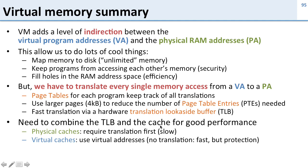We saw two basic cache combinations. First, there's a physical cache, which uses a physical address to index into the cache. This means we have to do the TLB translation first — we have to wait for the TLB before we can access the cache — and this is slow.